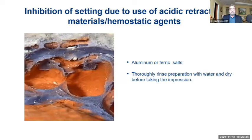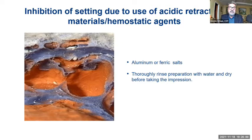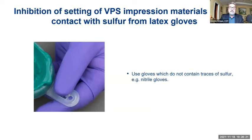We want excellent retraction for a nice clear impression. If it doesn't look clear, please retake that impression — otherwise it's going to create more chair time and affect your ROI. Inhibition of setting time can occur due to acidic retraction agents: aluminum ferric salts affect this, so thoroughly rinse the preparation with water and dry it before taking the impression. Inhibition can also occur due to contact with sulfur from latex gloves — we're all pretty much aware of this now. Use gloves that do not contain traces of sulfur; most of the time you'll be using nitrile gloves, which works great.